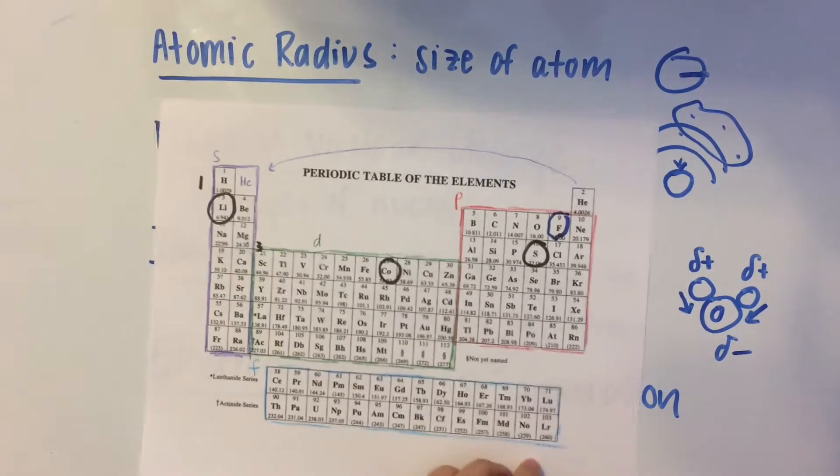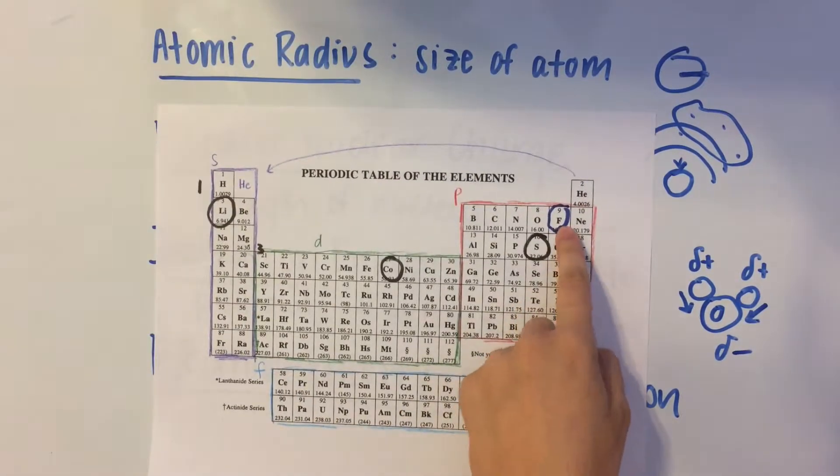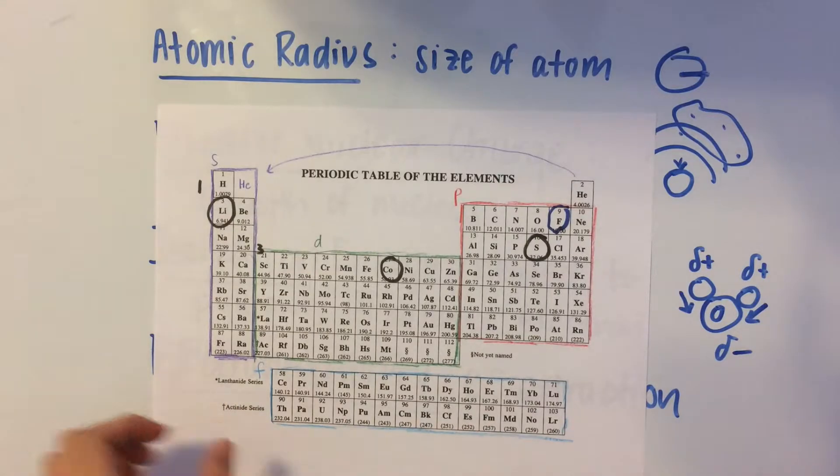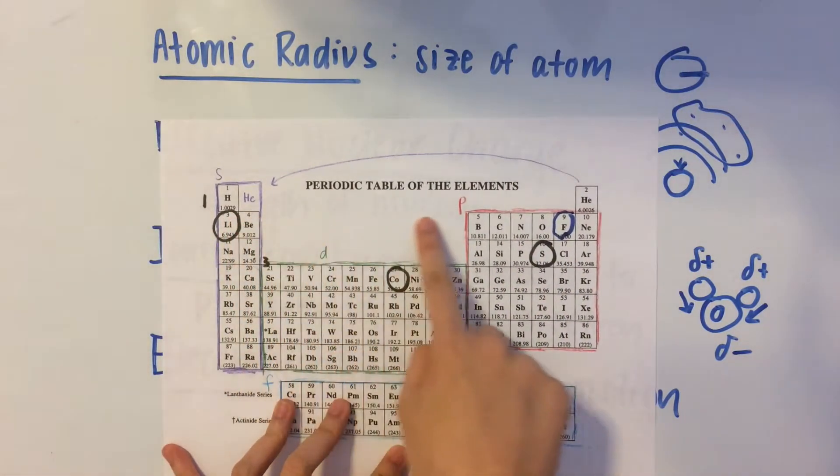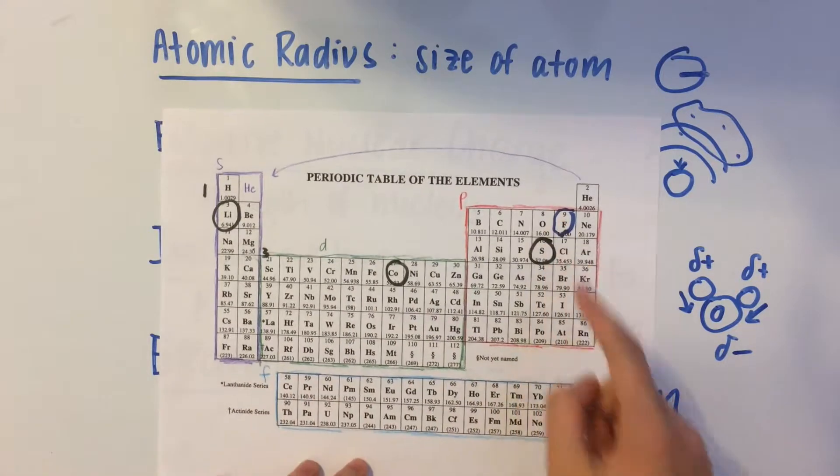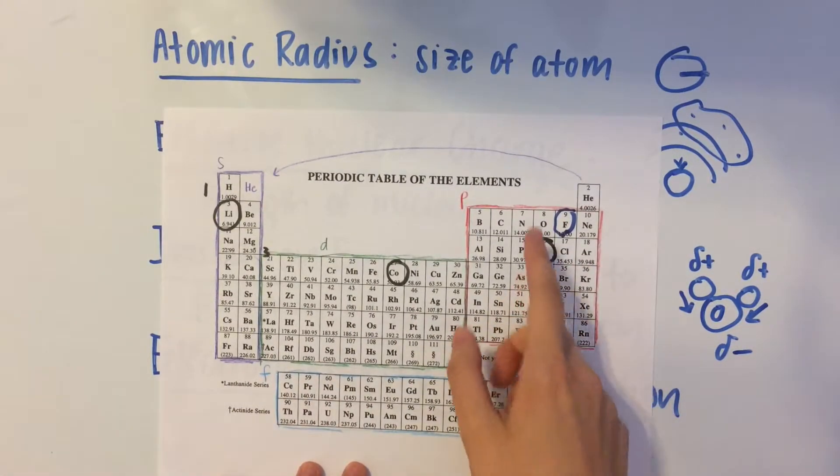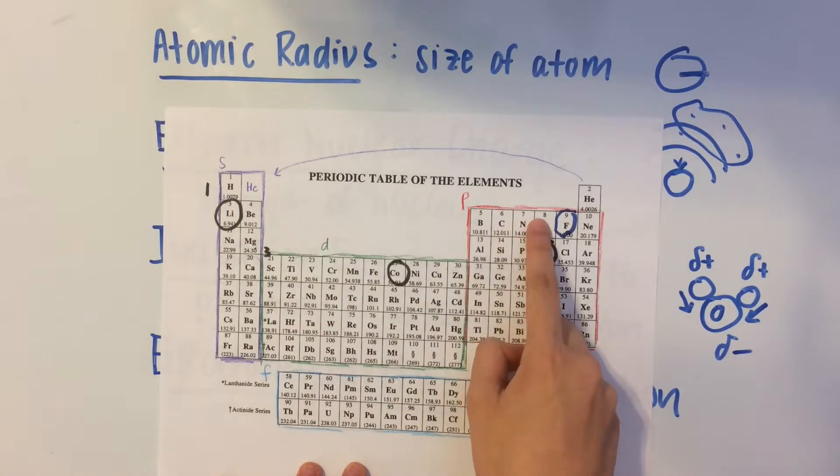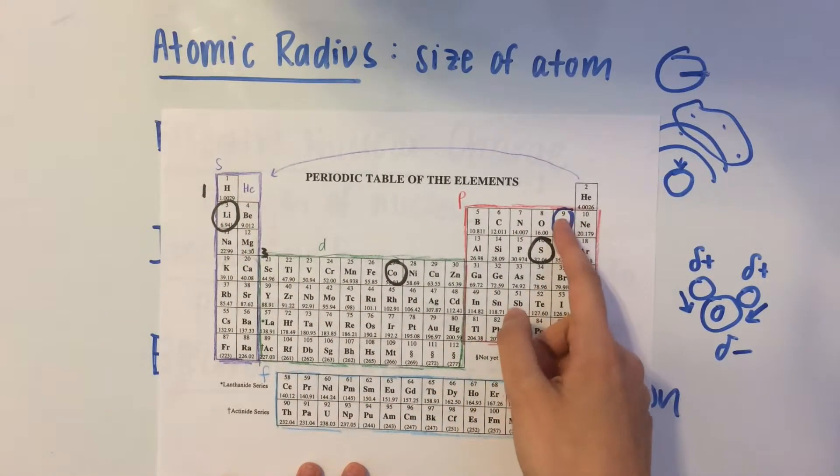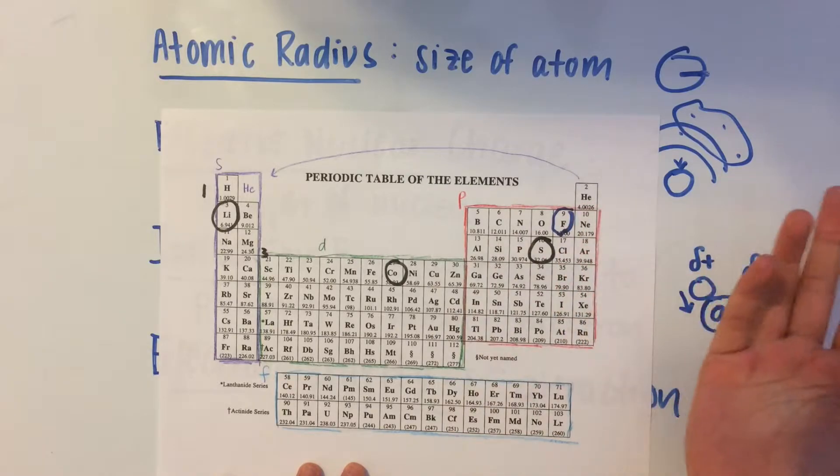So for atomic radius, I say that fluorine has the smallest atomic radius because atomic radius decreases down a row of the periodic table. And that's because you see the atomic number increases when you go to the right, which means its number of protons are increasing.